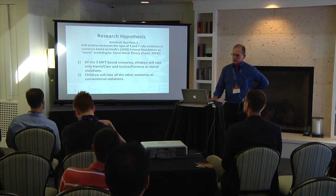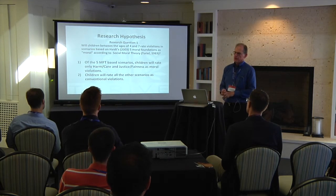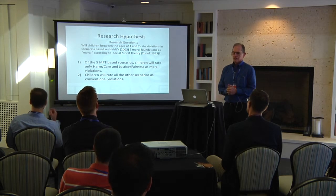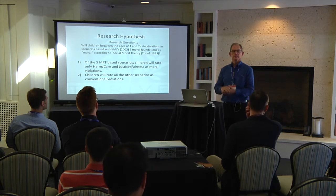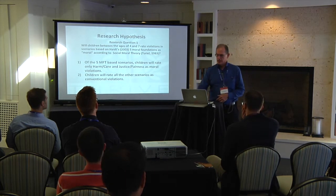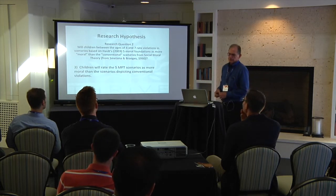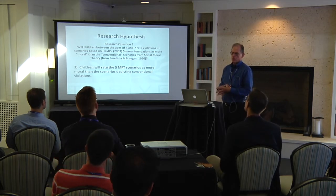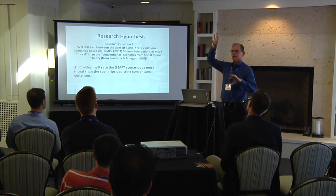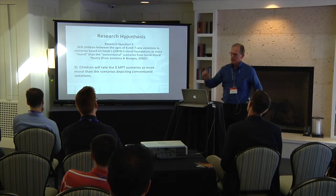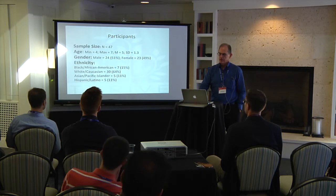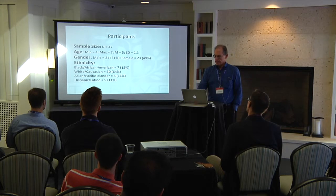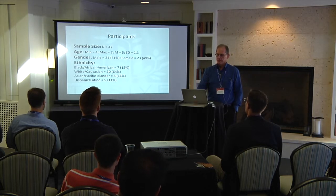We wanted to know: of the five moral foundation theory-based scenarios, would children only rate harm/care and justice/fairness as moral violations? That was one hypothesis — that they would rate only those and rate all other scenarios as conventional. We also thought children would rate the five moral foundation scenarios as more moral than the scenarios depicting conventional violations, with maybe a middle ground for the three of the five that were less certain. Our sample was 47 kids, pretty evenly balanced between male and female, average age between four and seven, and a fairly representative sample.